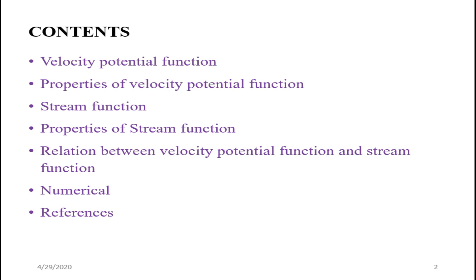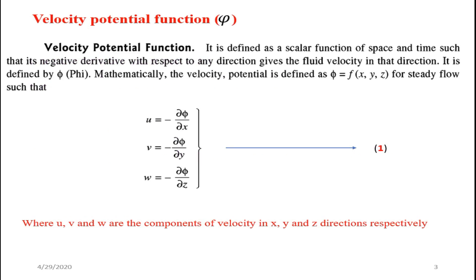The velocity potential function is a mathematical function in two-dimensional or three-dimensional flow such that its partial derivative in any direction gives the velocity in that direction. It is also defined as a scalar function of space and time such that its negative derivative with respect to any direction gives the fluid velocity in that direction. It is denoted by phi.